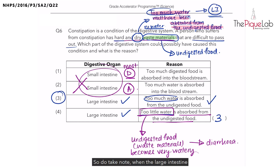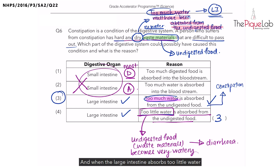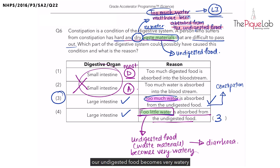To summarize: when the large intestine absorbs too much water from the undigested food, the undigested food becomes very dry and we go through constipation. When the large intestine absorbs too little water from the undigested food, the undigested food becomes very watery and we go through diarrhea.